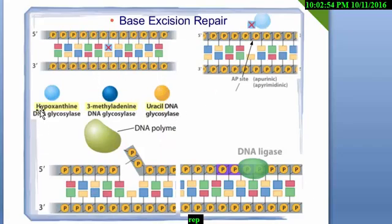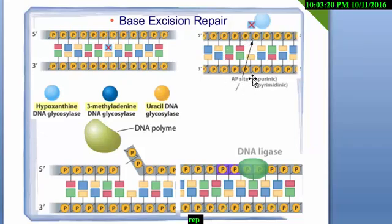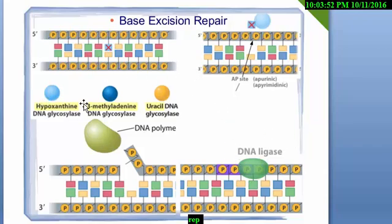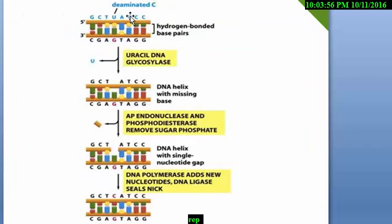To summarize: uracil DNA glycosylase, N-methyladenine DNA glycosylase for methylation damage, and hypoxanthine glycosylase enzyme can all be used depending on the damage. The AP site — which I described — means the gap; if it involves adenine and guanine, the site is called apurinic, and if it involves thymine and cytosine, it is called apyrimidinic. Then DNA polymerase makes the new nucleotide sequence, and the nick is filled by DNA ligase. That is the total DNA base excision repair sequence.